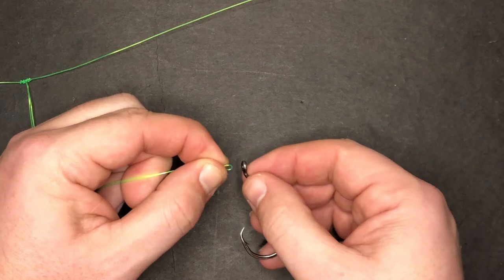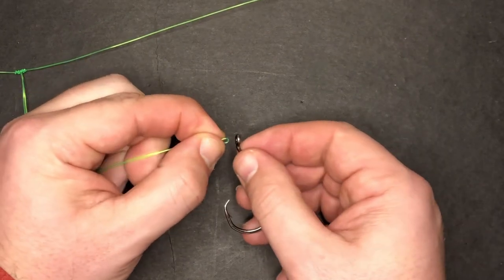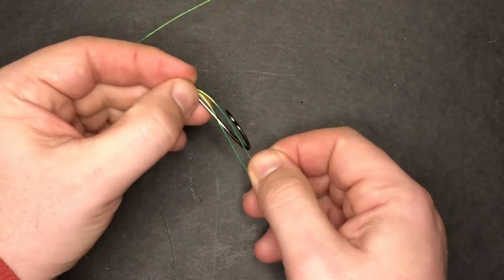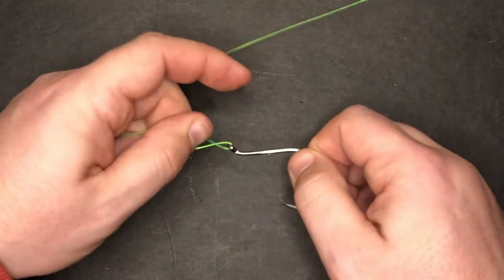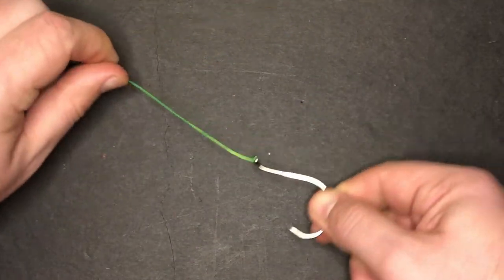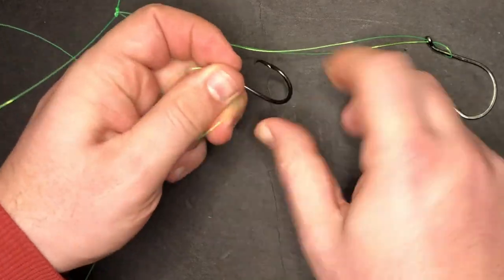Now, moving on to the dropper loops, we're going to add our hooks, similar to the sinker. I'm going to thread that dropper loop through the front of the hook eye, then wrap the loop around the hook, pull it up past the eye, and then pull it tight. Now, I'm going to do the exact same thing with the second hook.